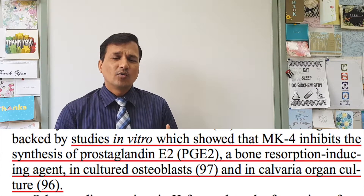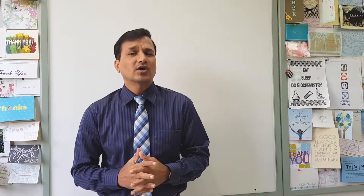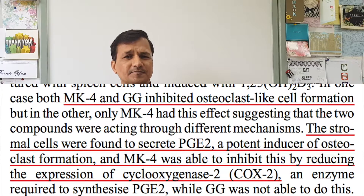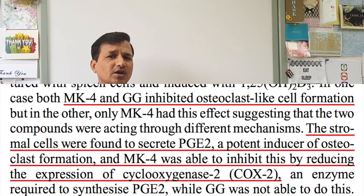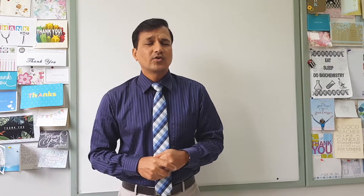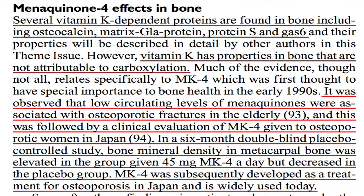Regarding how vitamin K helps in bone formation: one hypothesis is that vitamin K, especially MK4, decreases the production of prostaglandin E2. By decreasing prostaglandin E2, it decreases the pre-activation of osteoclasts. Vitamin K has also been noted to decrease the activation of cyclooxygenase, thereby reducing prostaglandin E2. Furthermore, menopausal osteoporosis and osteoporosis induced by corticosteroid intake can be prevented by supplementation of MK4s or MK7s.